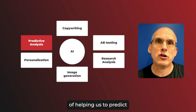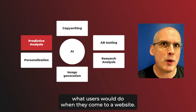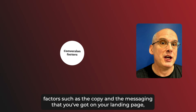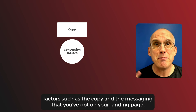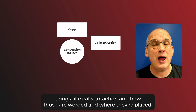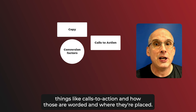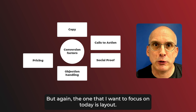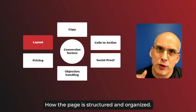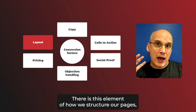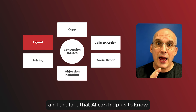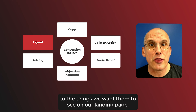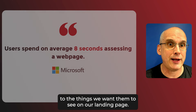But what I want to focus on today is predictive analysis — the fact that AI is actually capable of helping us predict what users will do when they come to a website. Obviously there are all kinds of different things that impact whether a landing page converts: factors such as copy, messaging, calls to action and how they're worded and where they're placed, social proof, objection handling, pricing, and all kinds of things. But the one I want to focus on today is layout — how the page is structured and organized.